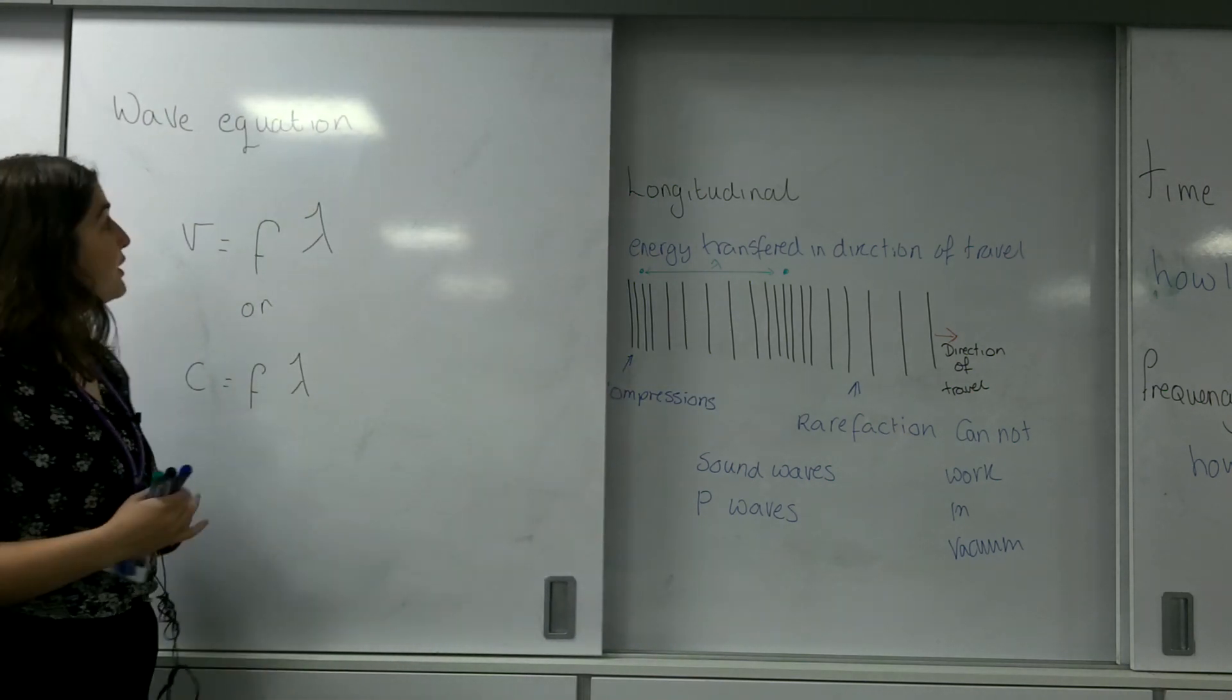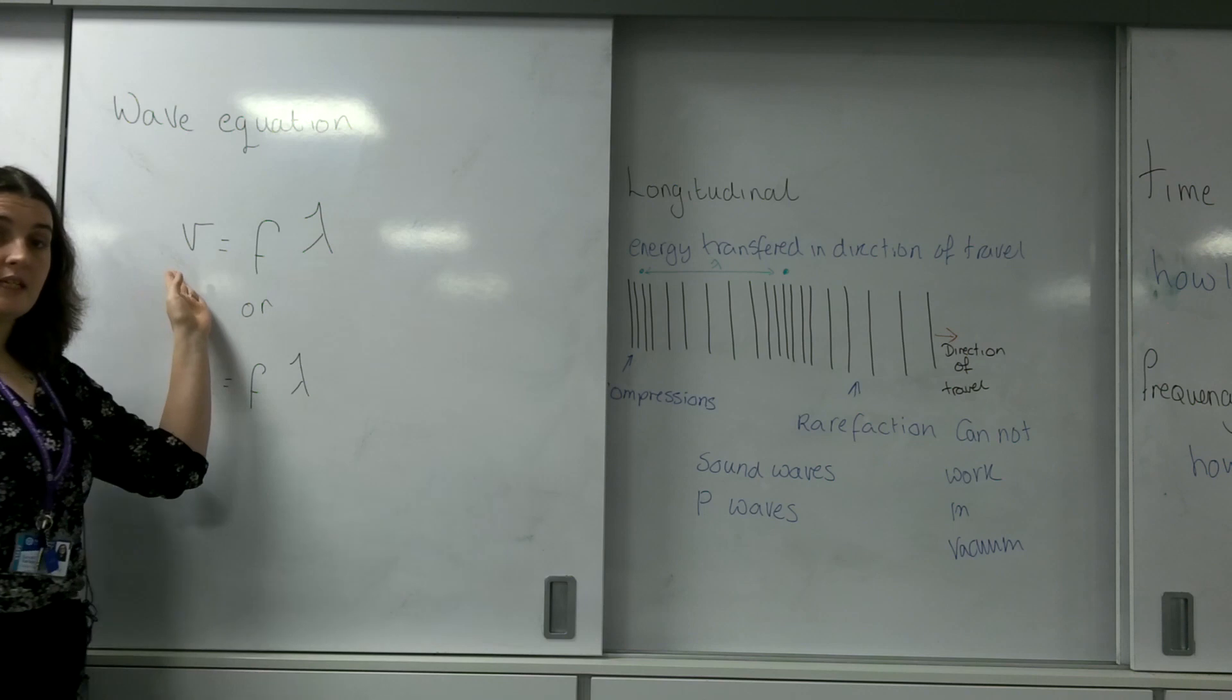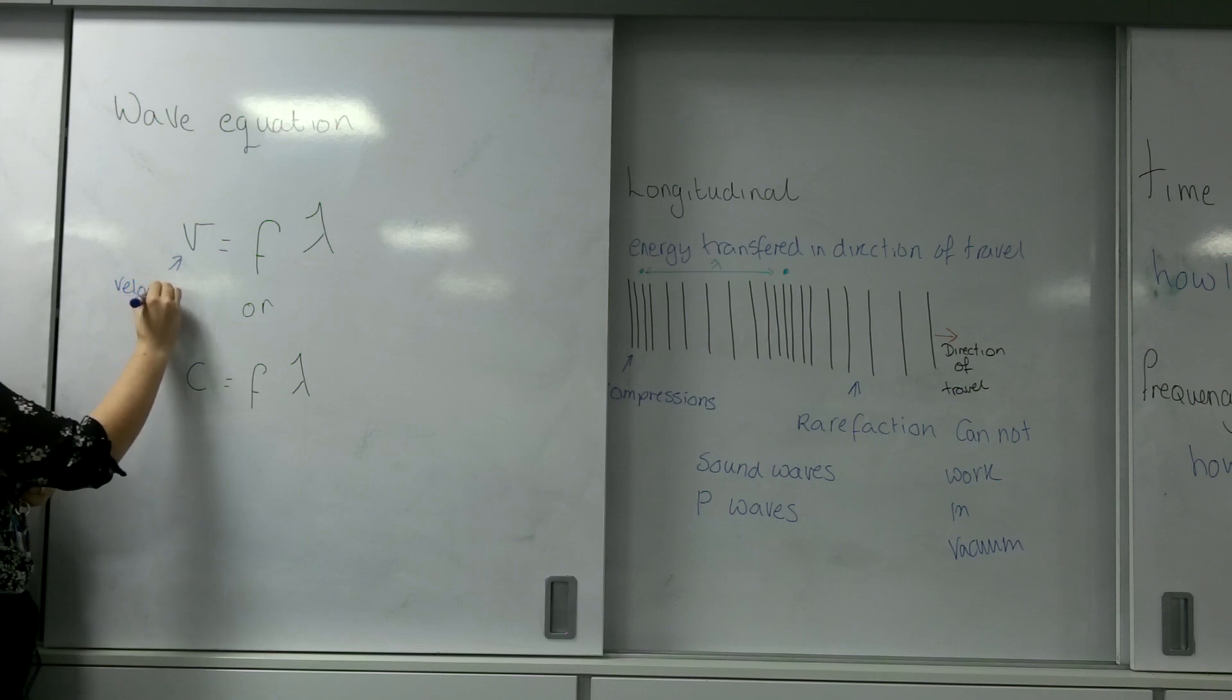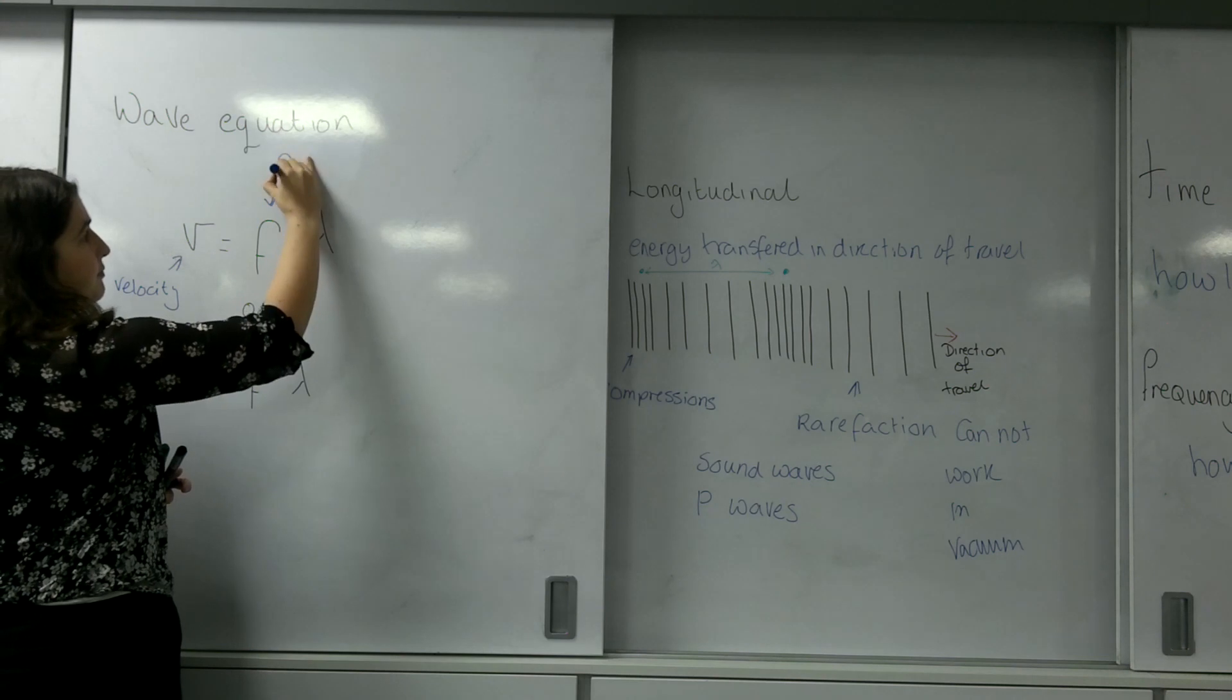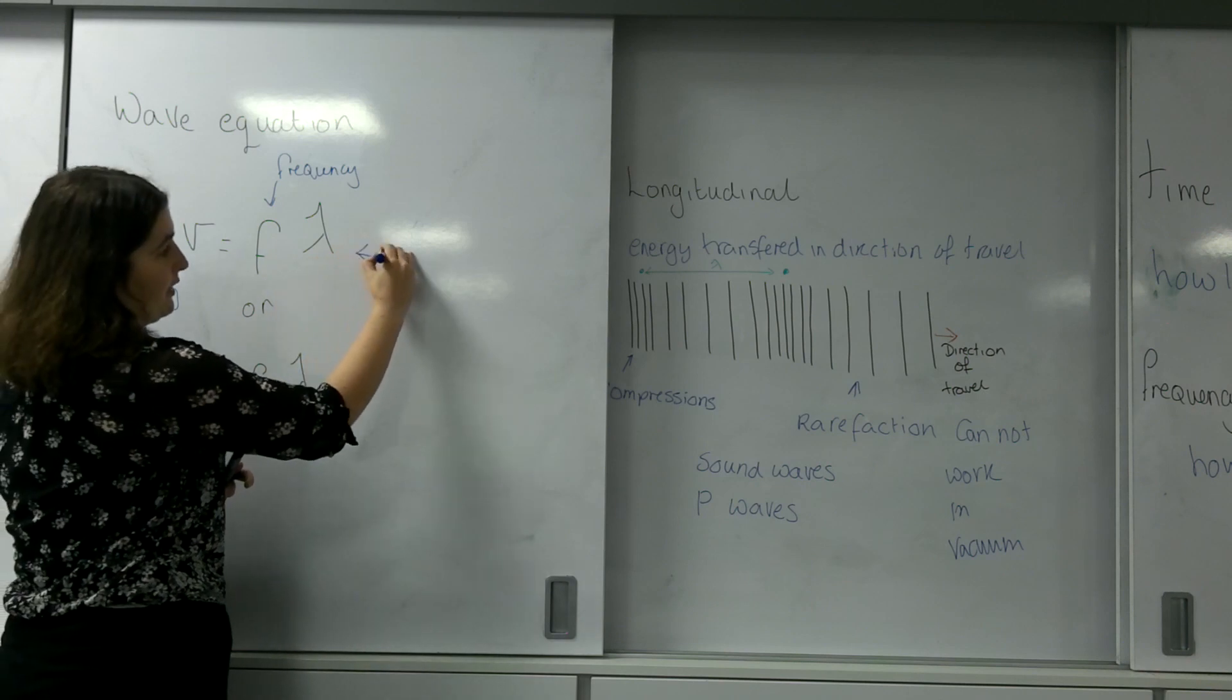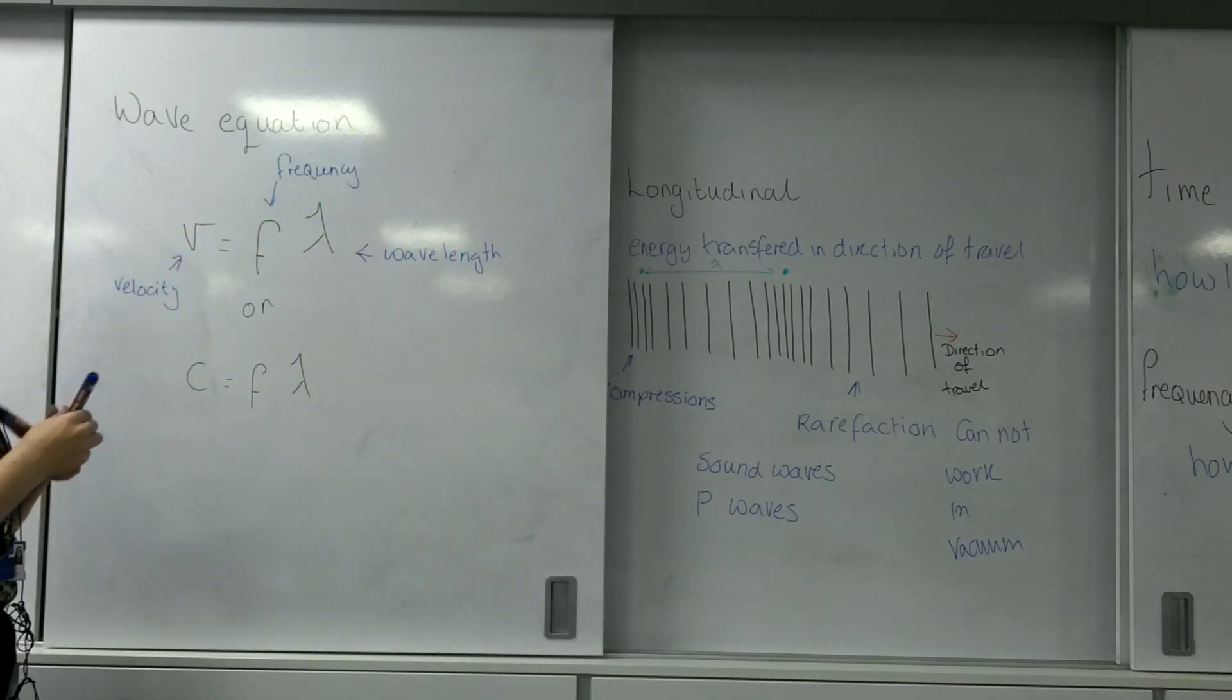We use something known as the wave equation. The wave equation is that the velocity here is the frequency of the wave times by its wavelength. And this comes up at GCSE.